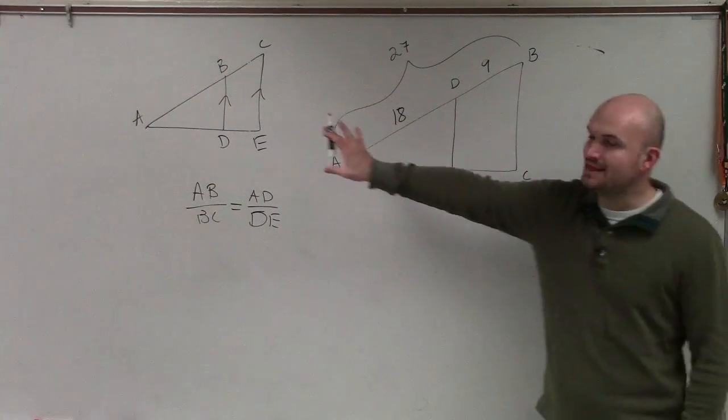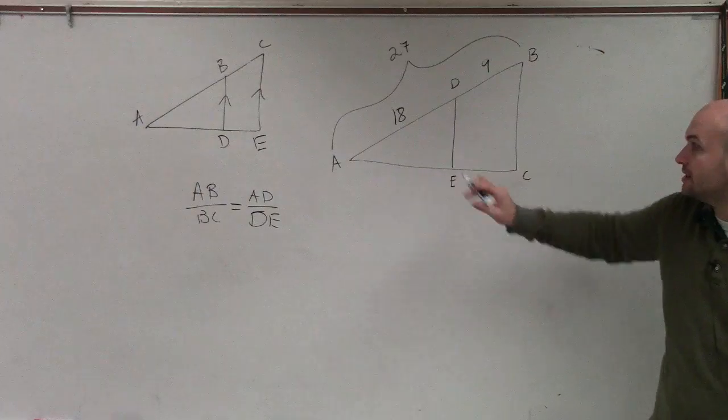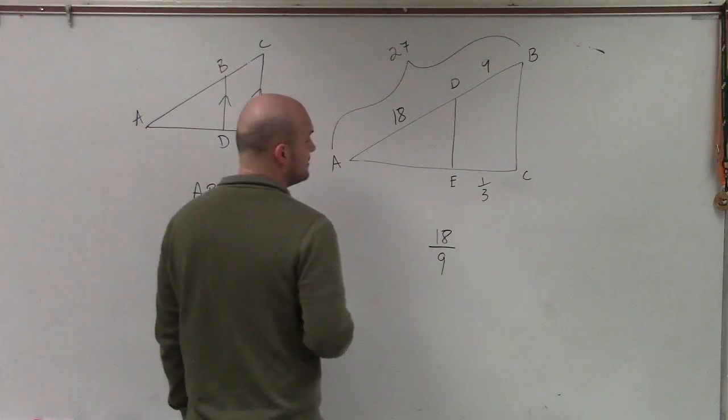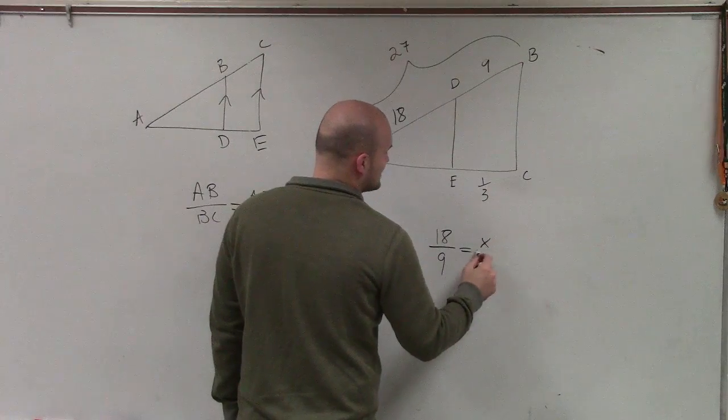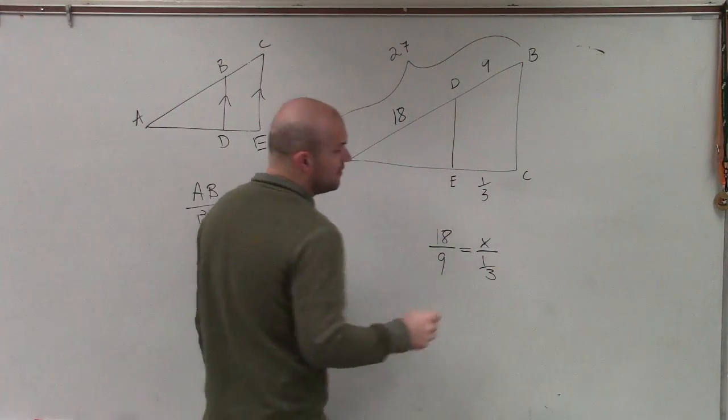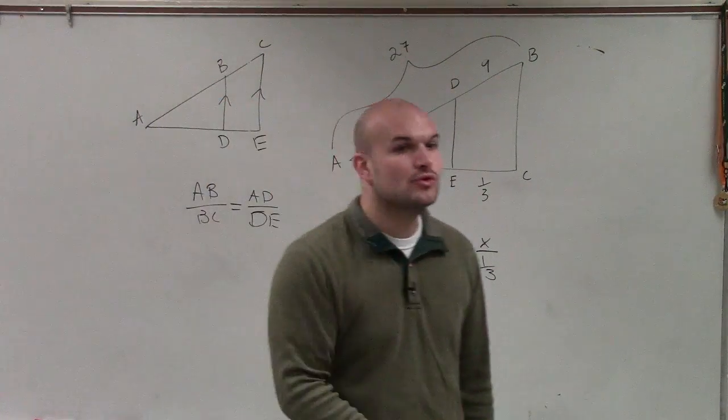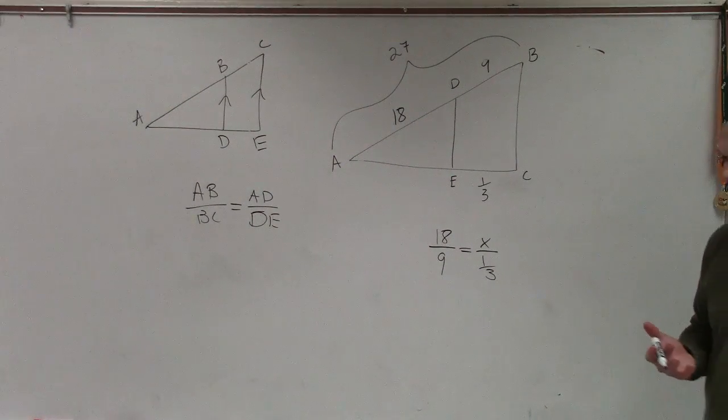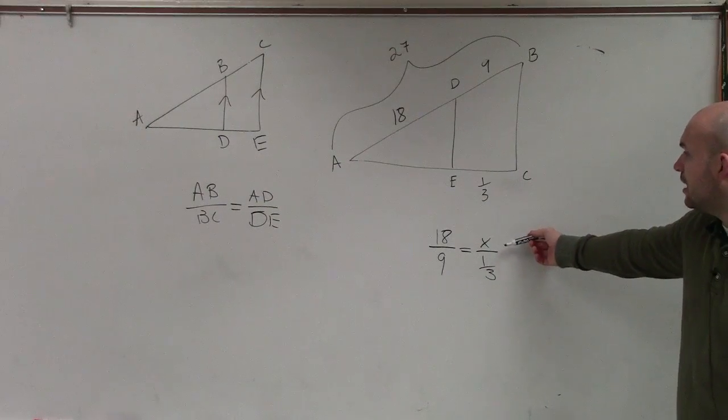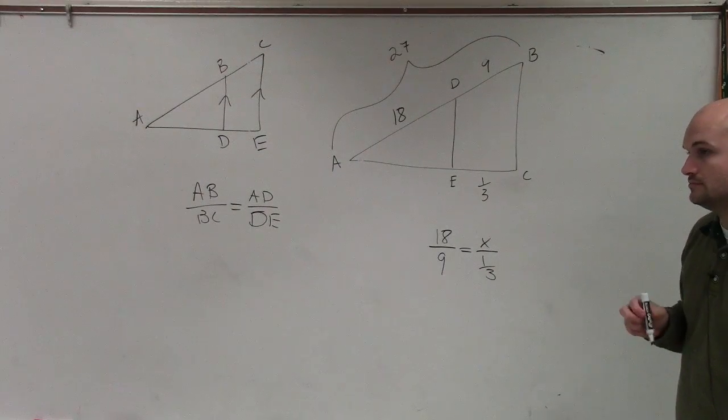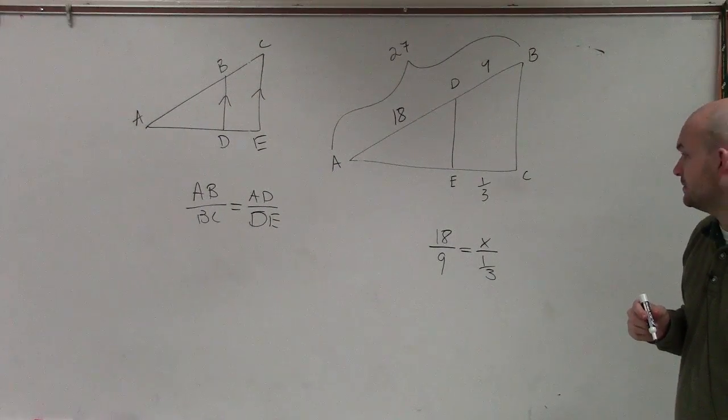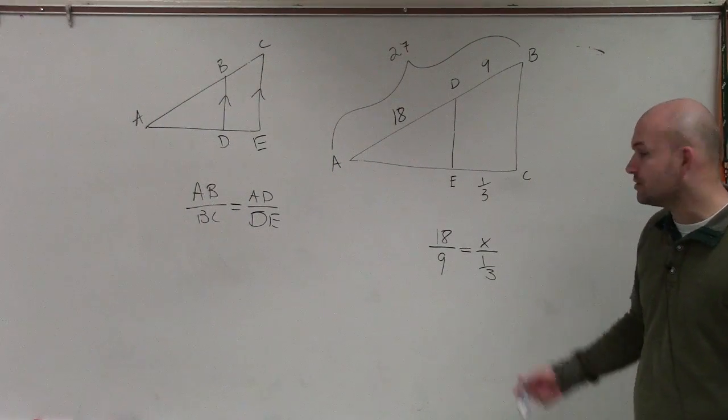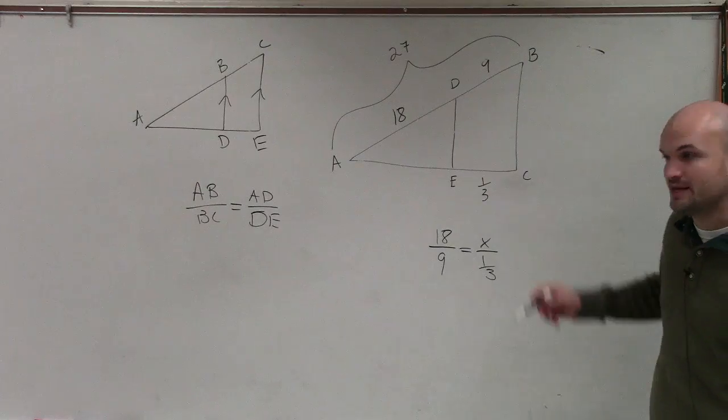So by now applying this theorem over here, I can say that 18 is to 9 as x is to 1/3. Because if I can prove that it is equal, then I can show that these are parallel lines, or I can prove for what value it's going to be equal.